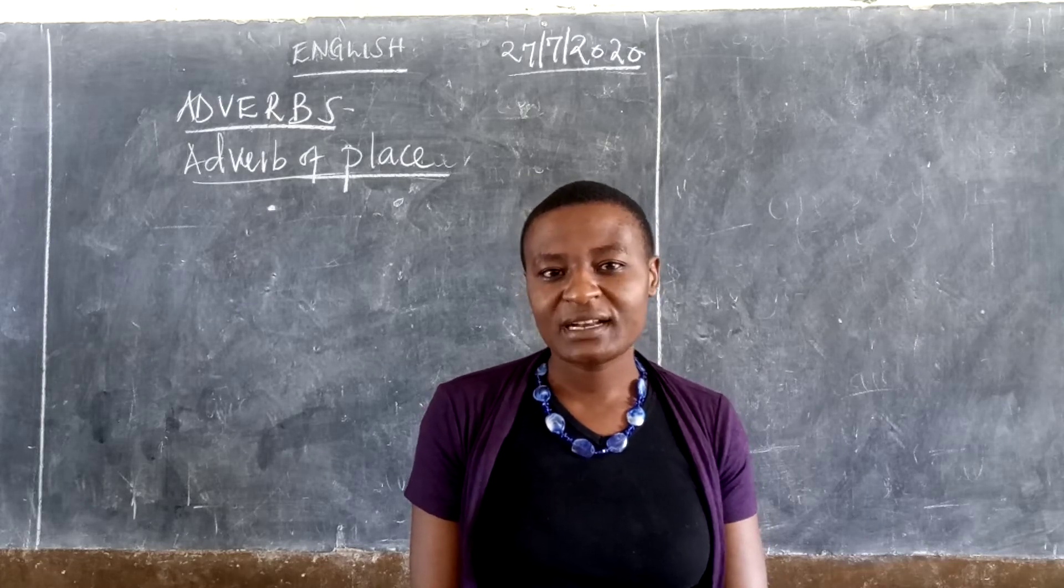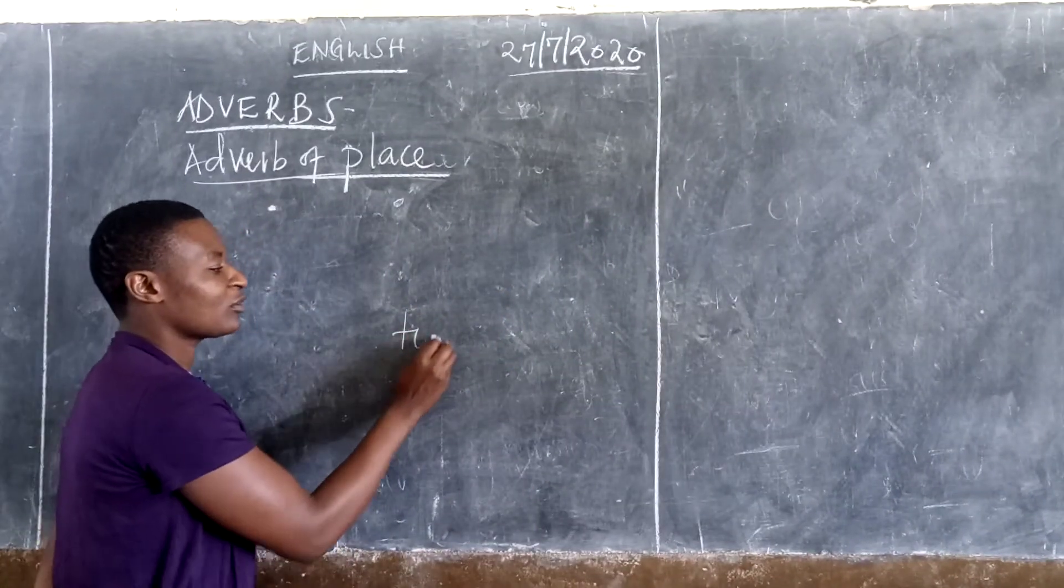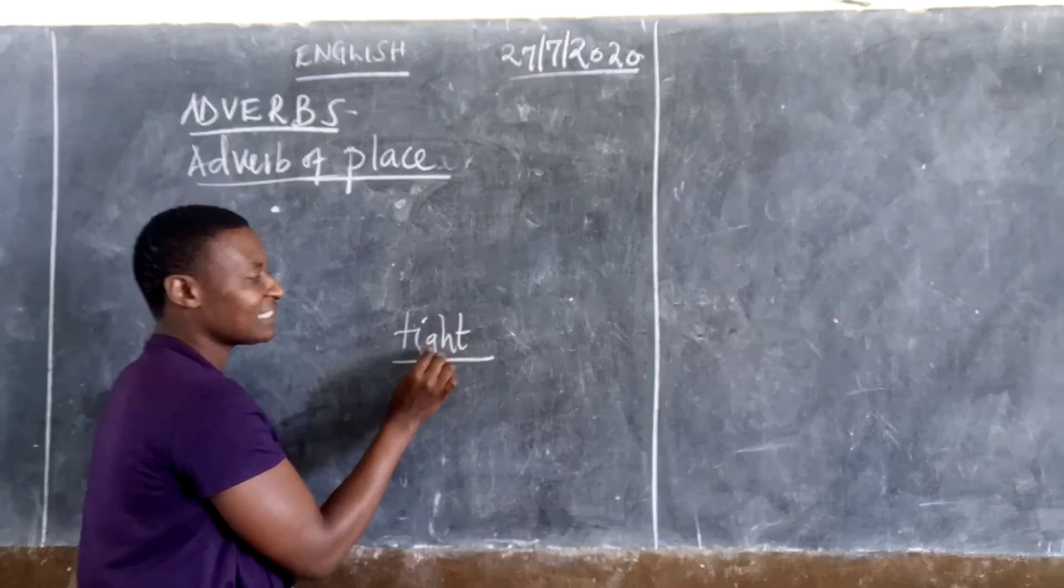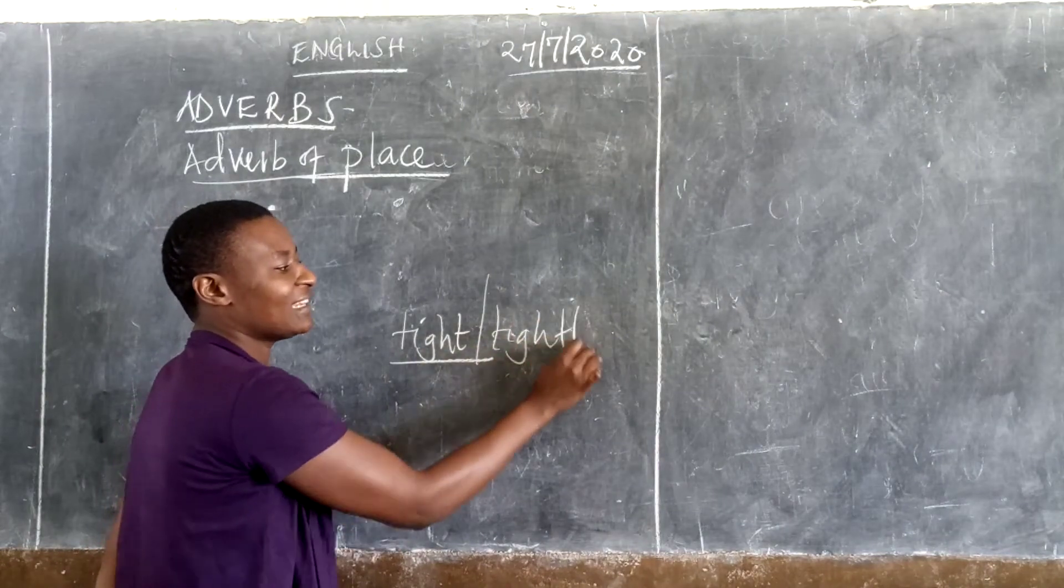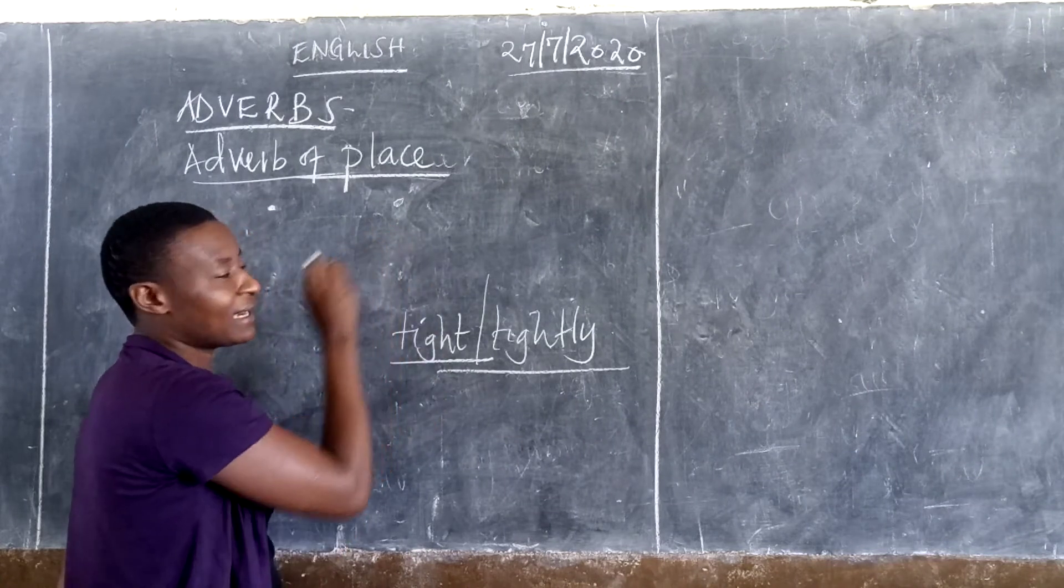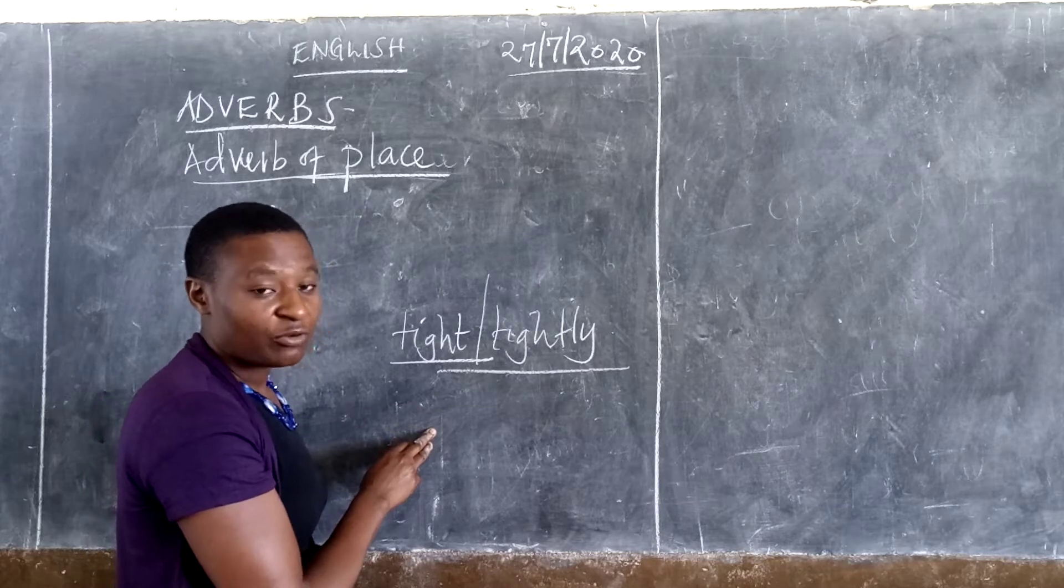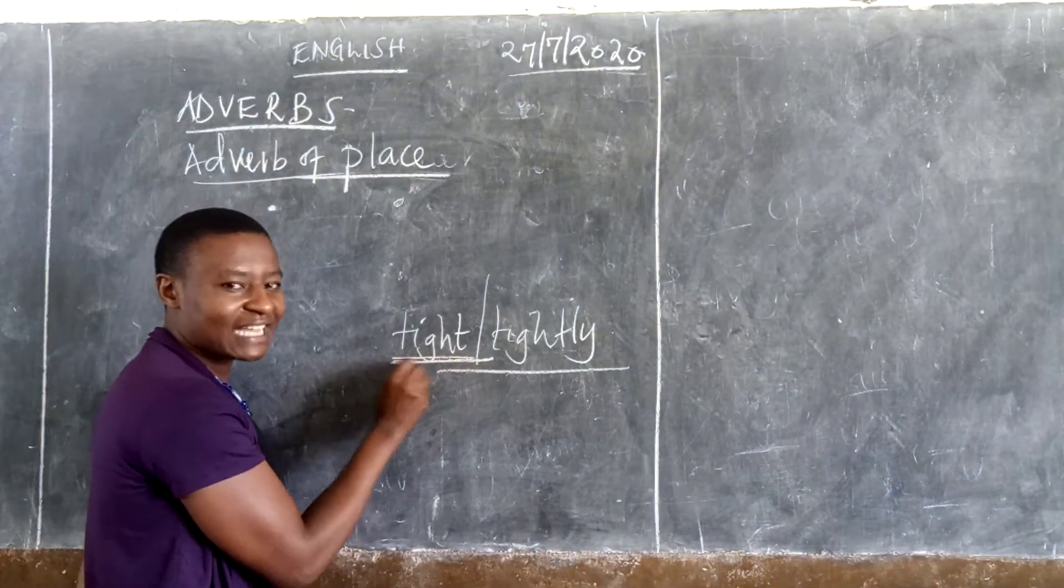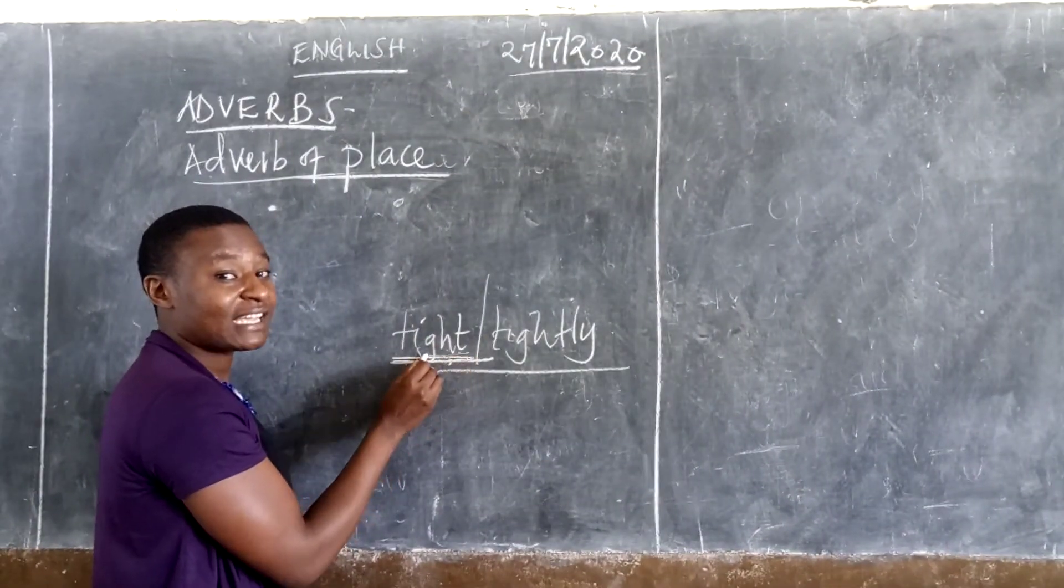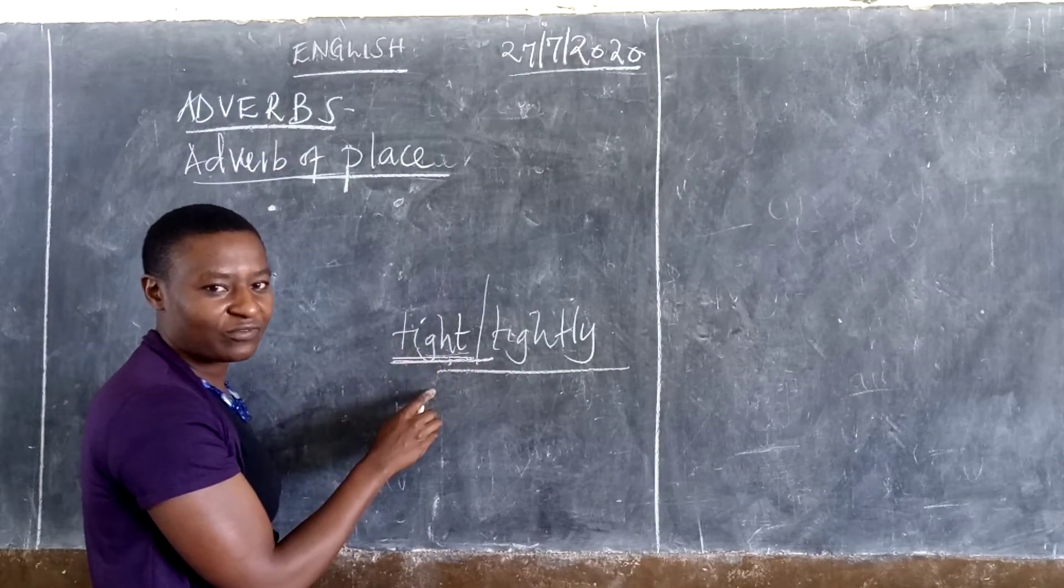You came across that word called tight. This is just a way. The word tight, together with this word tightly, they are both adverbs of manner. But it depends with the way they are being used in the sentence. For example, how do I use tight as an adverb in a sentence? I can only apply the word tight without adding ly if it is coming after the verb.